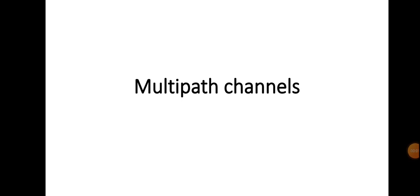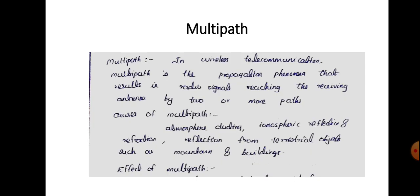Hey students, today we are going to discuss about multipath channels. It is a topic in the 6th module. What do you mean by multipath? This term comes in the case of wireless communication and wireless telecommunication systems. When we are transmitting a signal, there occurs a phenomenon called multipath. Multipath is the propagation phenomenon that results in the radio signal reaching the receiving antenna by two or more paths.